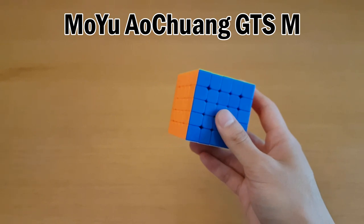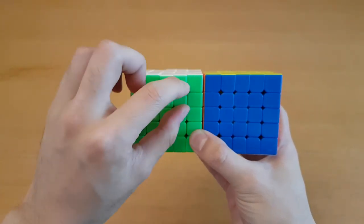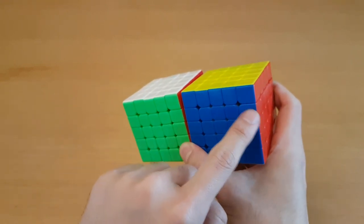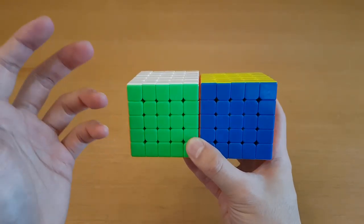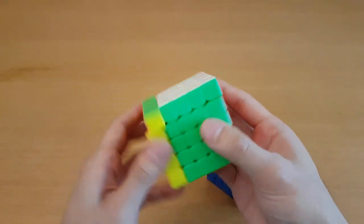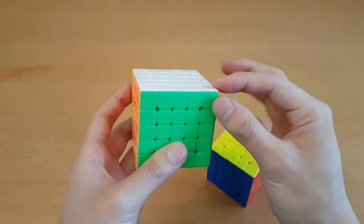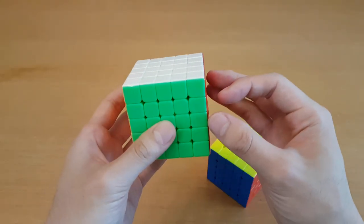My main right now is the Moyu Aochuang GTS-M, and as you can see, the GTS-M has a lot more rounded pieces, while this one is a lot more squared. The rounded pieces took me a while to get used to, but the Aochuang GTS's performance, in my opinion, is better than the Wuchoe, especially because it's a lot faster than the Wuchoe, which is the old cube from Qiyi. This also feels a little smaller because of the pieces not being jagged on the outside, but I believe they should be about the same size.